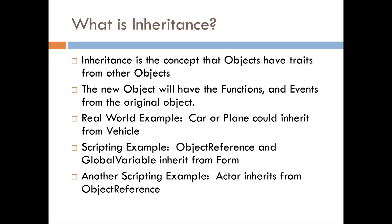In the Papyrus context, functions and events are the main items that you will get from an object. Good examples in the Papyrus world: ObjectReference and GlobalVariable inheriting from Form. Another one that helps highlight what you can do with inheritance — Actor is inheriting from ObjectReference. And since ObjectReference is inherited from Form, you will see why this distinction is important.